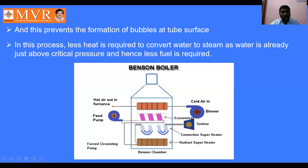The feed water is sent from the economizer into the radiant superheater, where some heating and reheating takes place. In the radiant superheater, the feed water is evaporated and converted into steam. From the radiant superheater, the steam enters into the convective superheater. From the convective superheater, it directly enters into the turbine. This is what about the Benson boiler diagram.